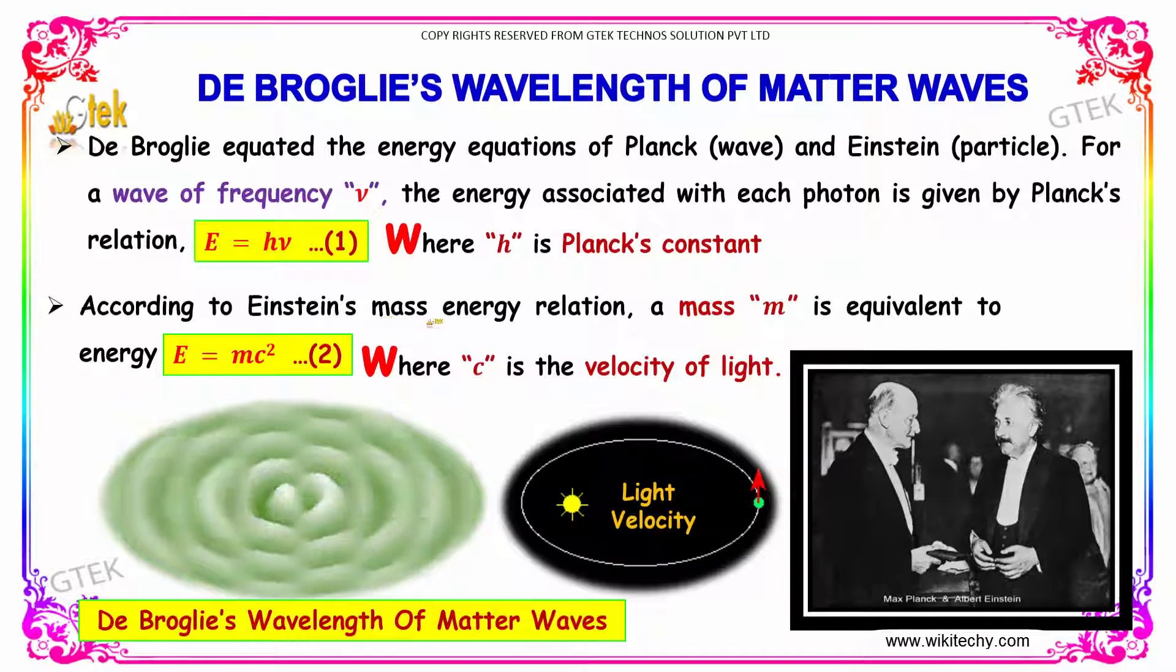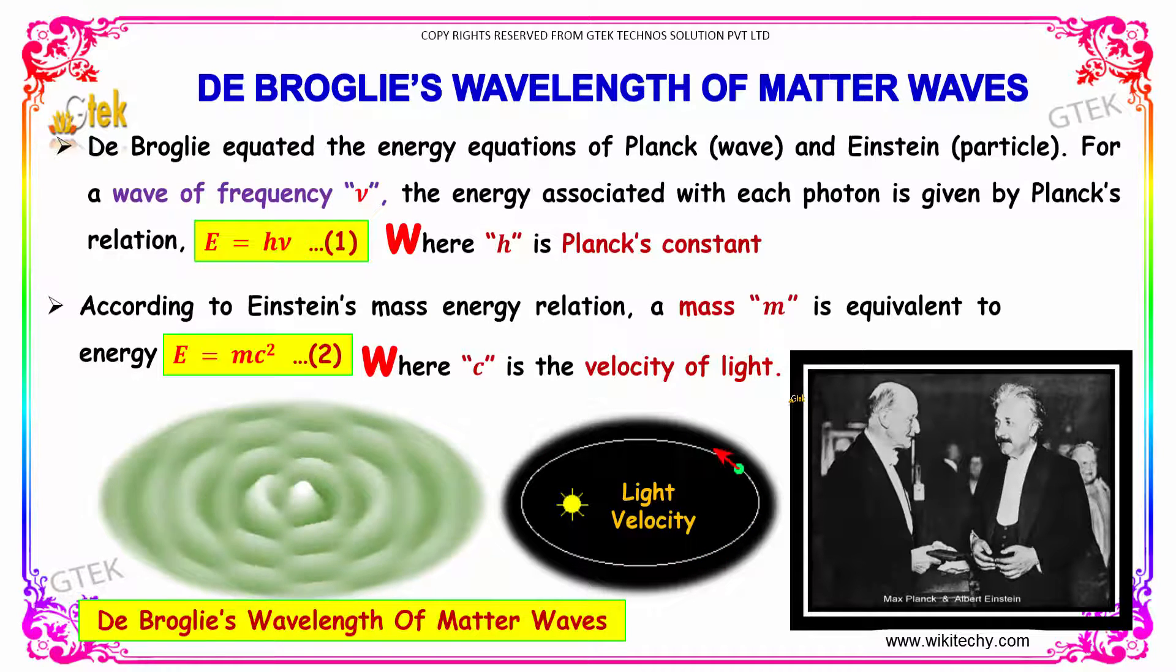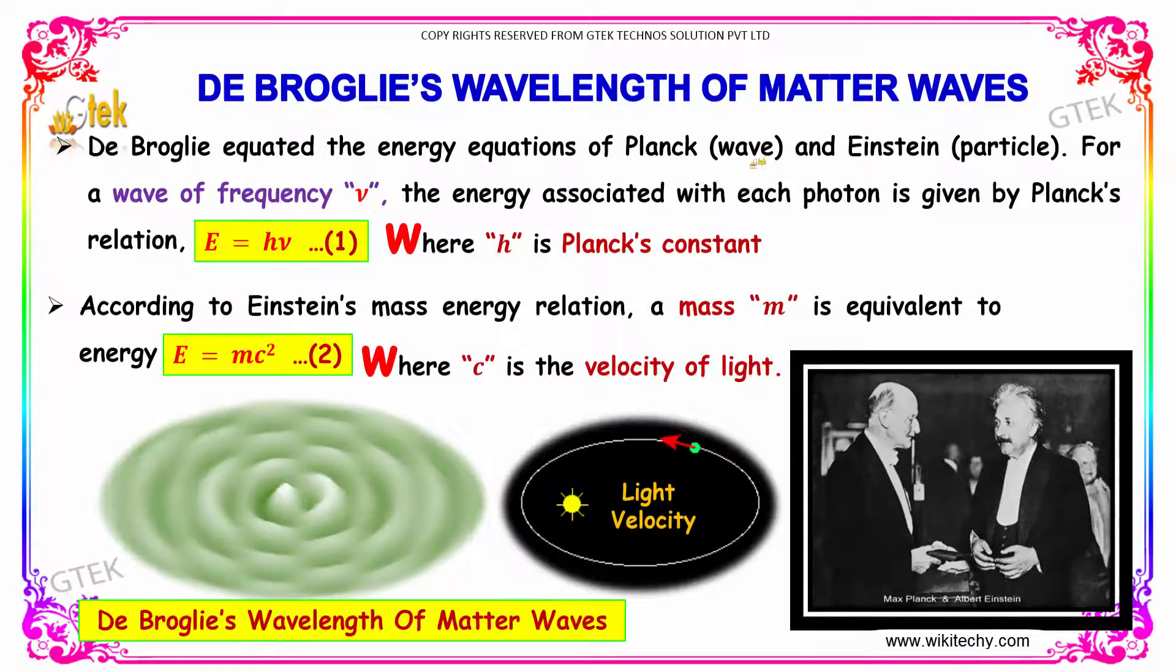According to Einstein, the mass-energy relation gives E = mc², where c is the velocity of light. This is referred to as De Broglie analysis and De Broglie wavelength of matter waves.